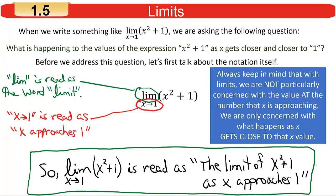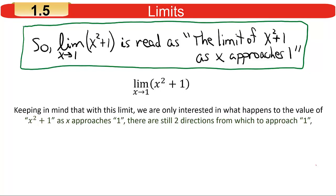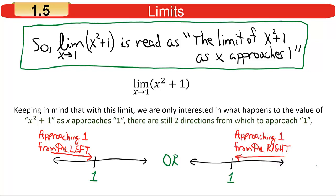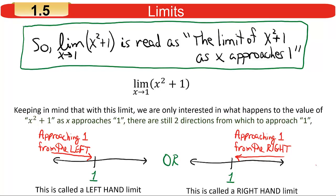Keep in mind, we're not particularly concerned about the value at the number — in this case at 1. We only want to know, with the concept of limit, what happens as x gets close to that value. There are two directions from which you could approach 1: from smaller values (approaching from the left) or from larger values (approaching from the right). So we have to worry about directionality as well.